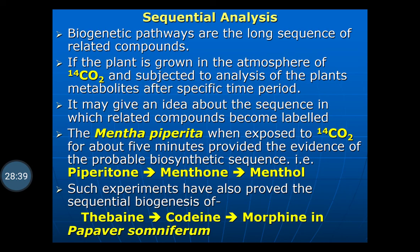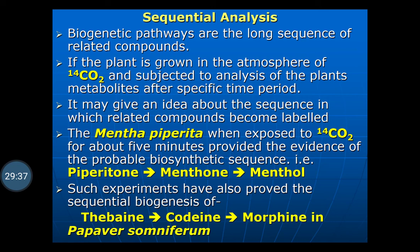Sequential analysis: biogenetic pathways are long sequences of related compounds — 20, 25, or 30 reactions. If the plant is grown in an atmosphere of 14CO2 and subjected to analysis after a specific time period, it may give an idea about the sequence in which related compounds become labeled. For example, in the case of Mentha piperita, when exposed to 14CO2 for about 5 minutes, it provided evidence of a probable biosynthetic sequence: piperitenone to menthone to menthol. Such experiments have also proven a sequential biogenesis of thebaine→codeine→morphine in Papaver somniferum.